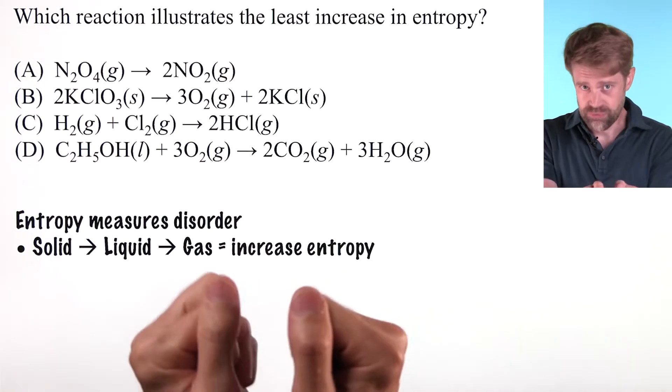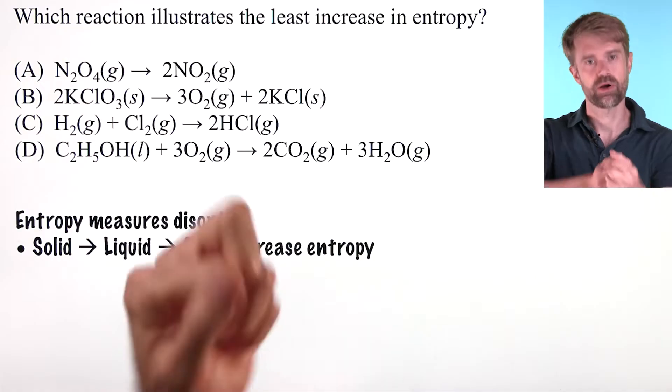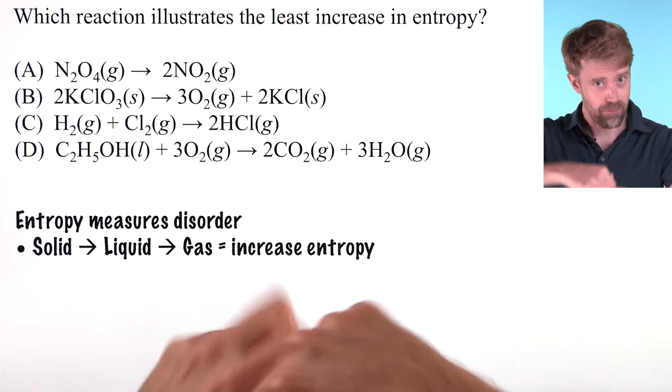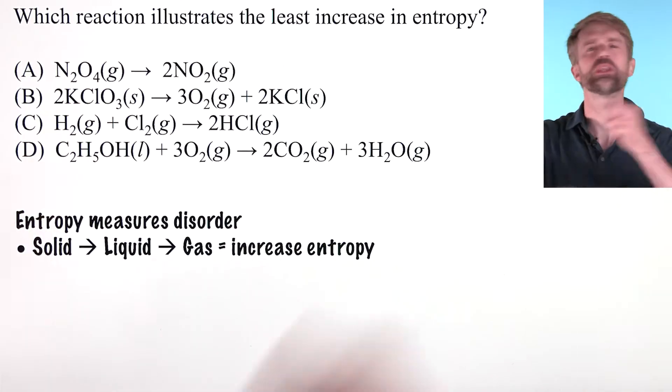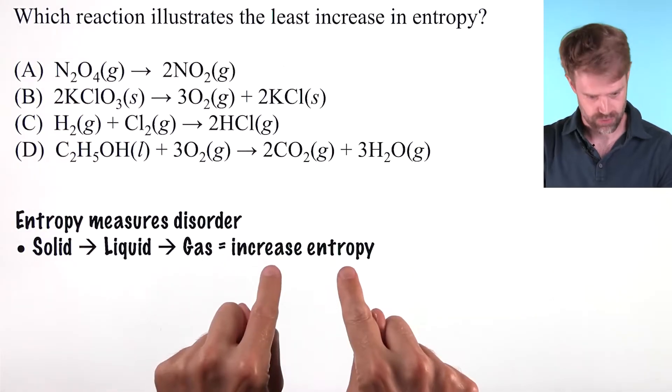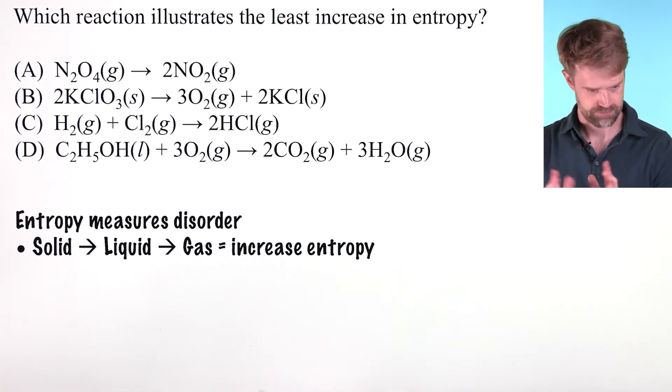The particles in a solid are fixed in place and vibrating. In a liquid, the particles are kind of swimming around. We've got more motion and disorder. And in a gas, the particles are flying around in constant random motion. So disorder and entropy increase as you go from solid to liquid to gas.